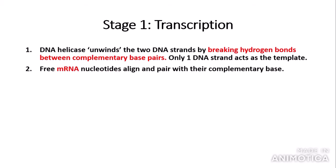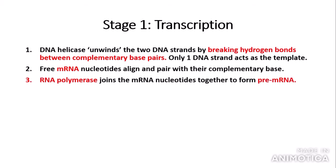The second step is that free RNA nucleotides align according to the specific base pairing rule and pair with their complementary bases — for example, an adenine base on the template strand aligns with a free uracil RNA nucleotide. Then RNA polymerase joins the mRNA nucleotides together to form pre-mRNA. In the case of prokaryotic cells, mRNA is produced directly.